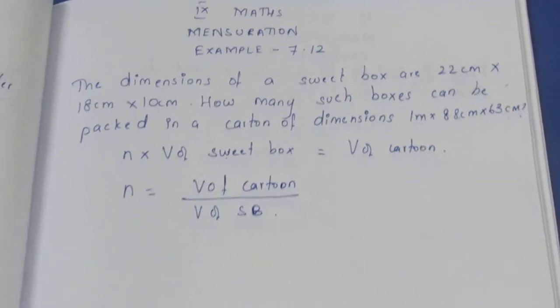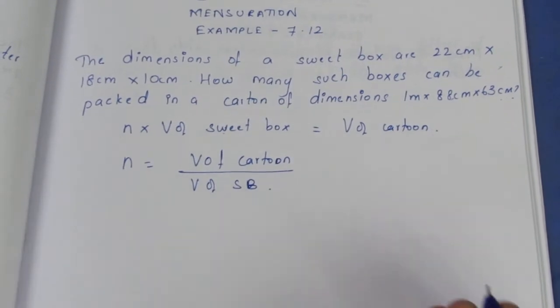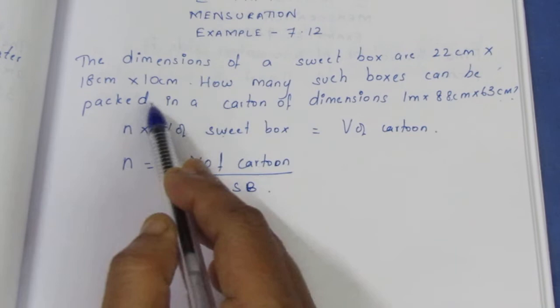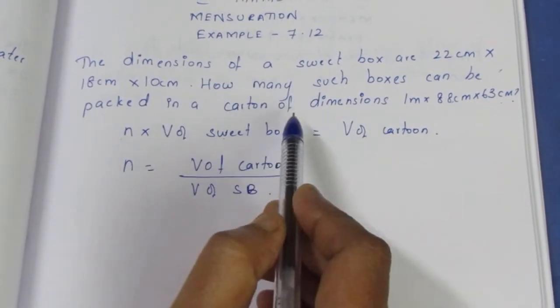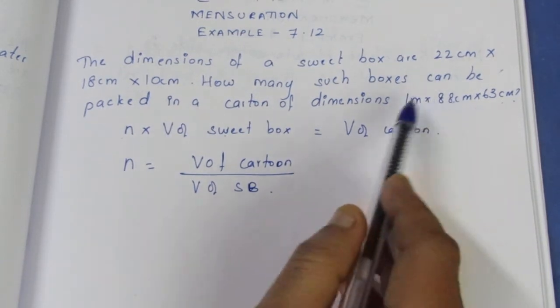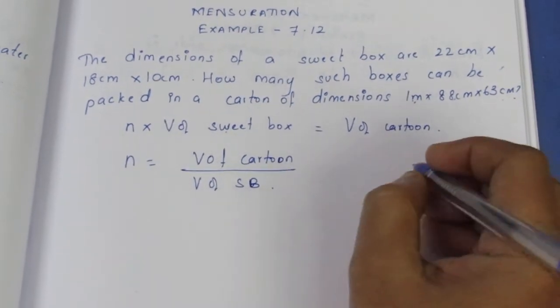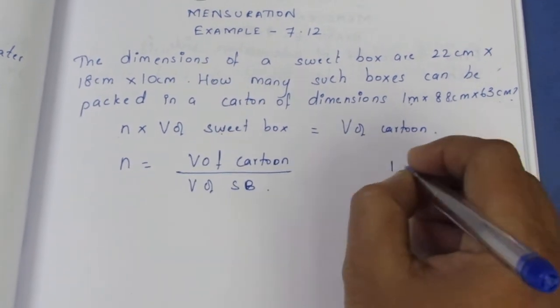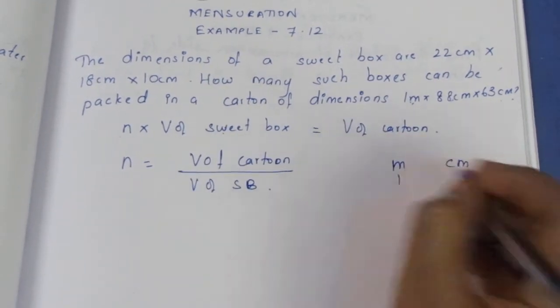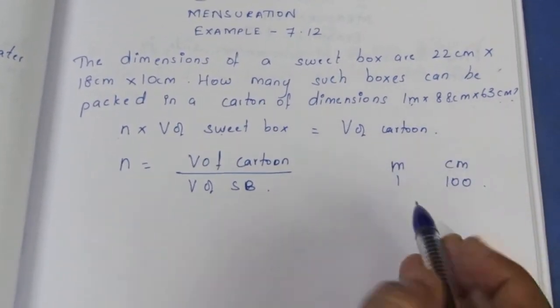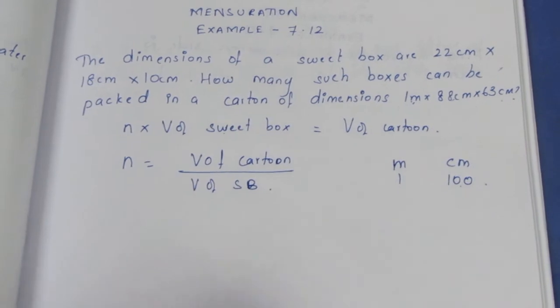Sweet box dimensions are given. For the carton, we have one dimension in meters. We need to convert to centimeters. 1 meter is equal to 100 centimeter.